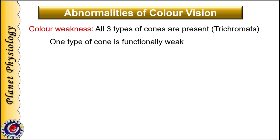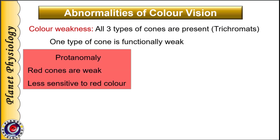First is color weakness. In case of color weakness, all three types of cones are present in the retina — these persons are trichromats. But the spectral sensitivity of any one type of cone is altered and as a result that particular cone cannot function normally. Depending upon the type of abnormal cone, color weakness is subclassified as follows. First is protanomaly, that is red color weakness. The word has two parts: 'prot' is for red color and 'anomaly' for abnormal, meaning red cones are abnormal.